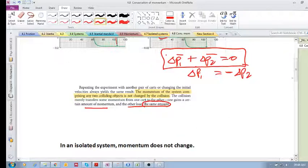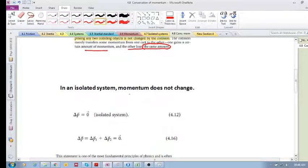So let's carry on. In an isolated system, momentum does not change. We've seen this before. Therefore, delta P is zero in an isolated system.